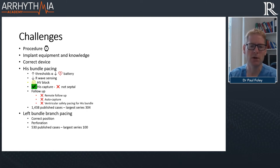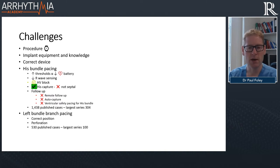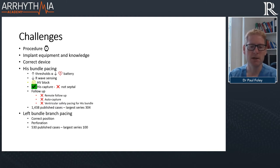Auto capture does not work for His bundle systems, and ventricular safety pacing isn't applicable. Published case numbers stand at approximately 1,438 with the largest series at 304 — no major randomised clinical trials. Left bundle branch pacing is more attractive: thresholds tend to be much lower, analogous to RV apical pacing, and R wave sensing is normal. There is an attendant risk of perforation; case series total around 530 patients, largest series 100, again with no randomised clinical trials.